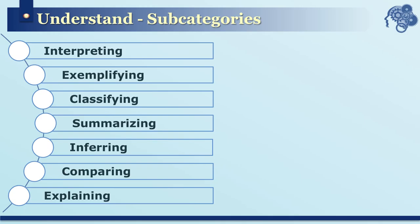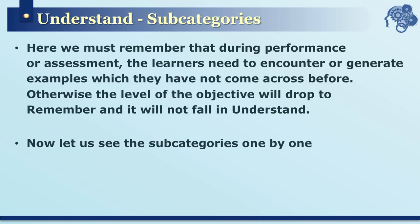There are seven subcategories of the understand level: interpreting, exemplifying, classifying, summarizing, inferring, comparing, and explaining. Learners need to encounter or generate newer examples — content not encountered before, not part of the instruction, not in the textbooks, and not discussed by the teacher. Only then does the objective level remain at understand; otherwise it drops down to remember.